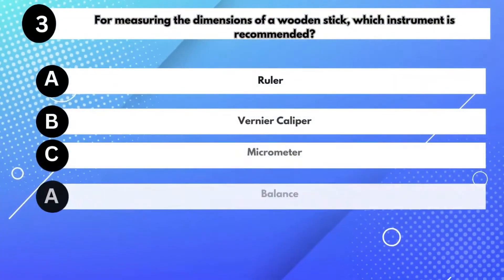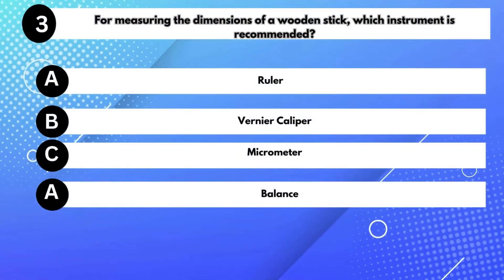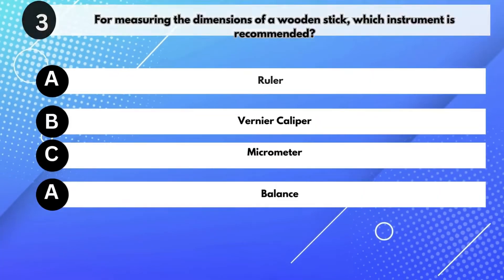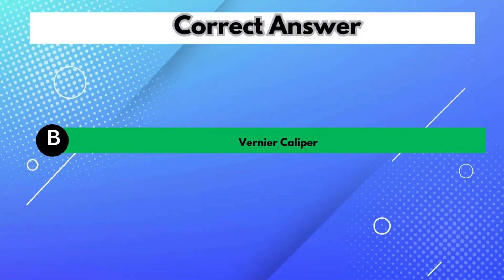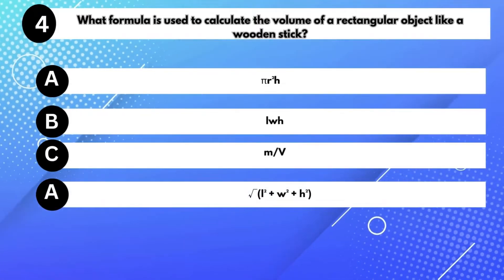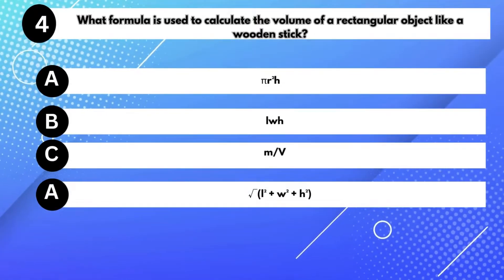For measuring the dimensions of a wooden stick, which instrument is recommended? Answer B: Vernier Caliper. What formula is used to calculate the volume of a rectangular object like a wooden stick? Answer B: L times W times D.